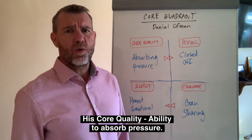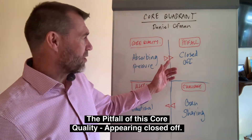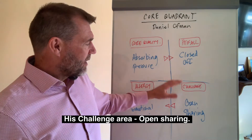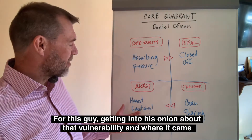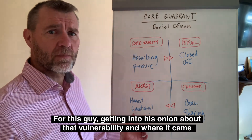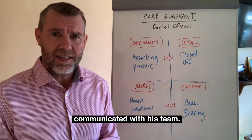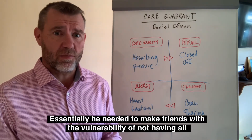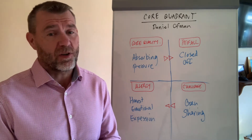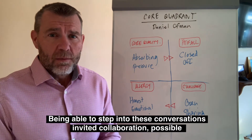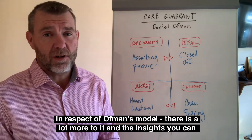When we explored it through the lens of core quadrants, this is what emerged. His core quality was the ability to absorb pressure. The pitfall was appearing closed off. His challenge was about openly sharing, and his allergy turned out to be around honest emotional expression. For this guy, getting into his onion about that vulnerability and where it came from was the key that unlocked more helpful choices in how he communicated with his team. Essentially he needed to make friends with the vulnerability of not having all the answers. Being able to step into these conversations invited collaboration, possibility, ways forward, and better relationships.